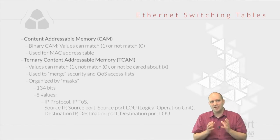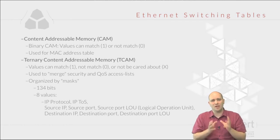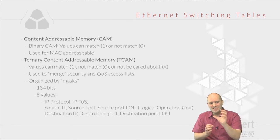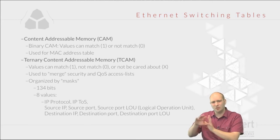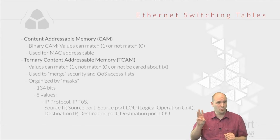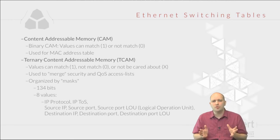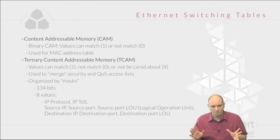There is another table used in switches — and the CAM table is actually a subset of it on Cisco switches — called the Ternary Content Addressable Memory, or TCAM table. The TCAM can be looked up not only for match or no-match, but also with a 'don't care' condition for certain bits. So there are three possible options: match (1), don't match (0), or don't care (X).